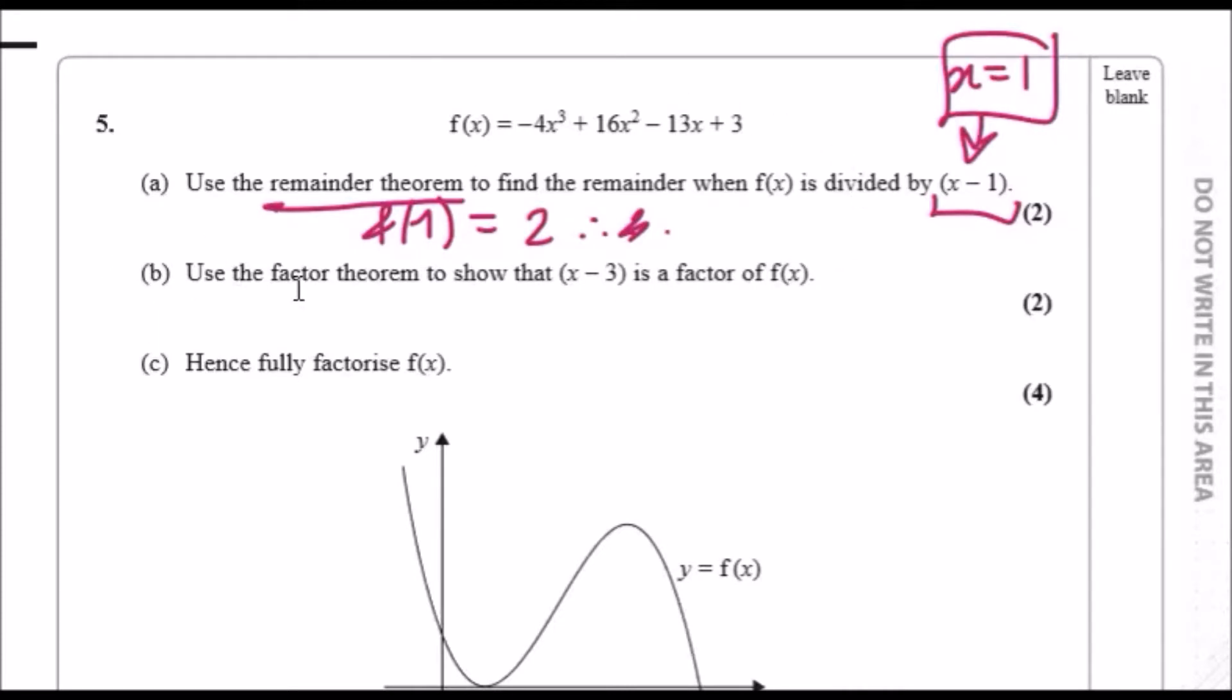Now use the factor theorem to show that x minus three is a factor of f(x). So firstly, to show that this is a factor, this implies that f(x) must equal zero when, in this case, x equals three. So let's check it out when you plug in three to this equation.